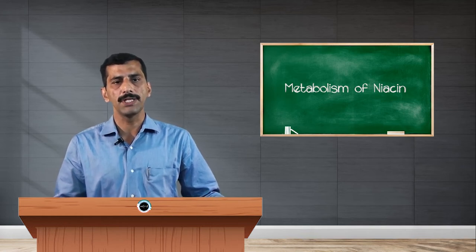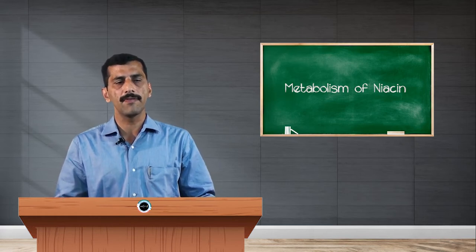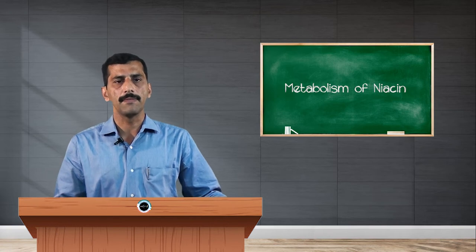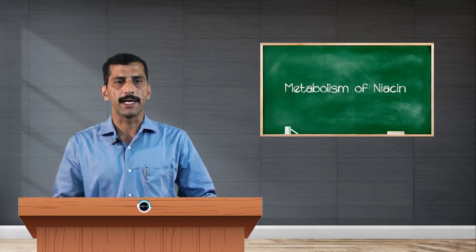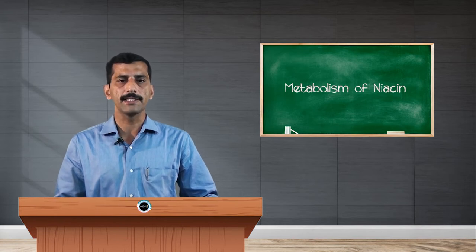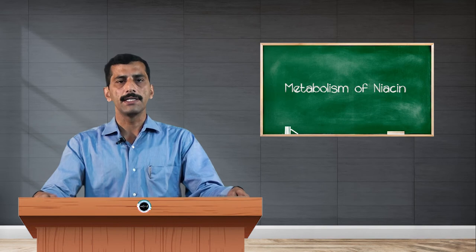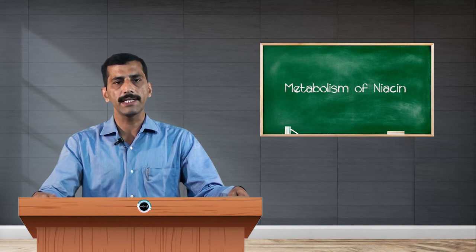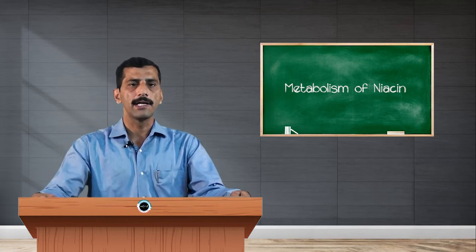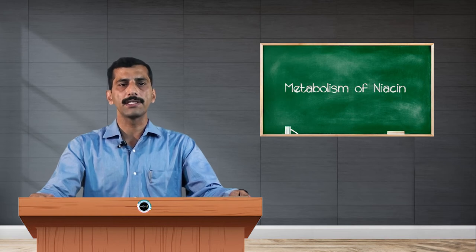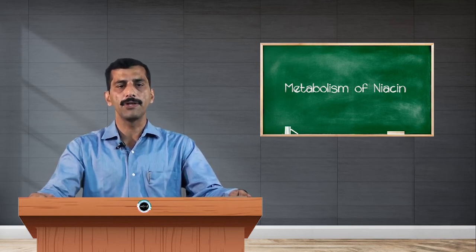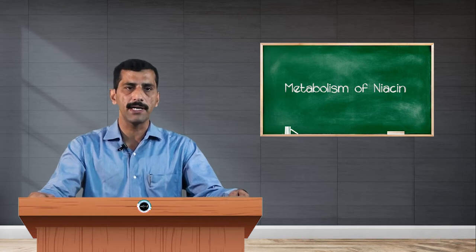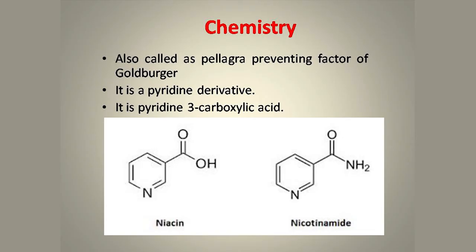pantothenic acid, vitamin B12, and pyridoxin. The major fat-soluble vitamins include vitamin A, vitamin D, vitamin E, and vitamin K. The deficiency of thiamine causes beriberi, deficiency of riboflavin causes cheilosis, deficiency of niacin causes a disease called pellagra, vitamin B12 is required for the development of neurons and its deficiency causes pernicious anemia, and deficiency of pyridoxin causes megaloblastic anemia.